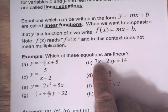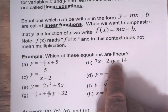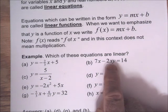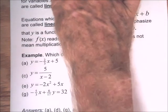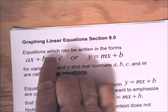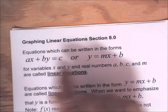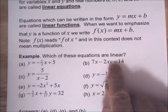Part B, 7X minus 2XY equals 14. That's not linear because we have this XY product. And the forms that we're looking for, we can have a number times X or a number times Y, but we don't have an X times Y in either of these forms. So this one here is not linear.